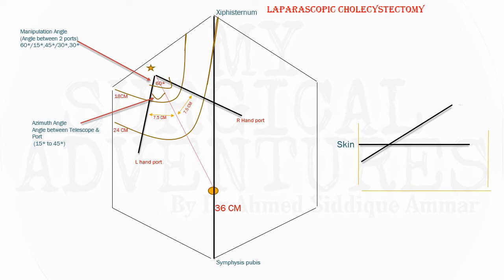The elevation angle is the angle of the port with respect to the skin surface as you insert it into the abdomen. This should be approximately 30 degrees. This is an important ergonomic principle of laparoscopic surgery. You must adjust the operating table height according to your own height so that the elevation angle remains at 30 degrees. If the angle is more than 30 degrees, the table is too low; if less than 30 degrees, the table is too high, placing excessive stress on your shoulders.